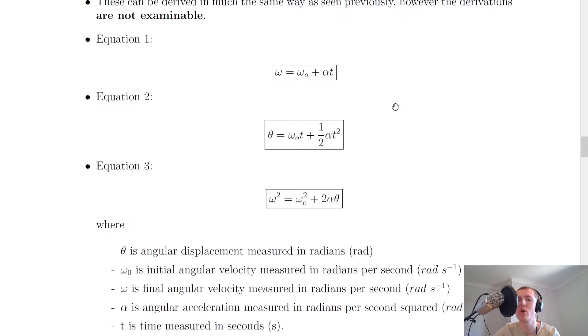So you'll see we've got the three equations of angular motion here. Equation one is omega equals omega naught plus alpha t, and what this means is the final angular velocity is equal to the initial angular velocity plus the angular acceleration times the time.